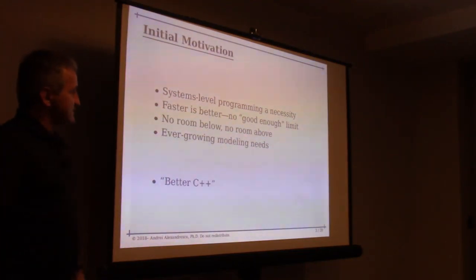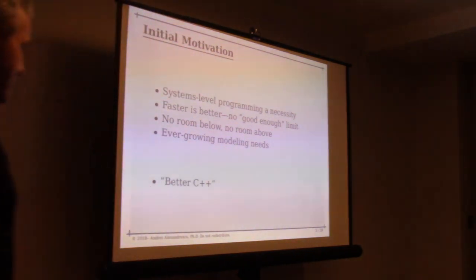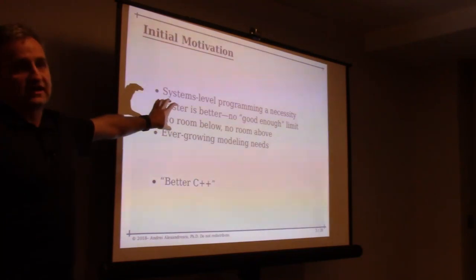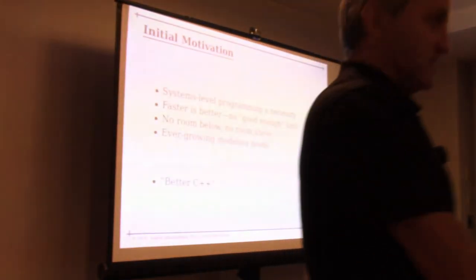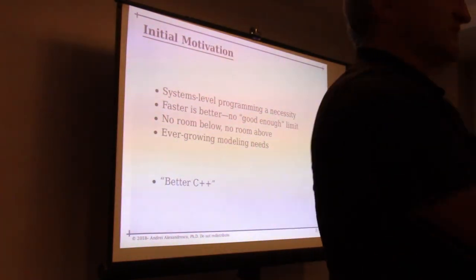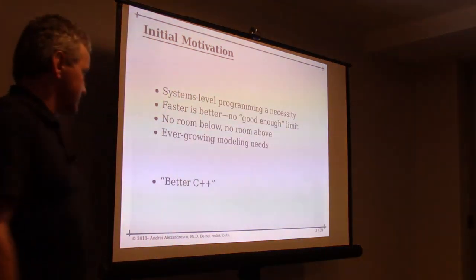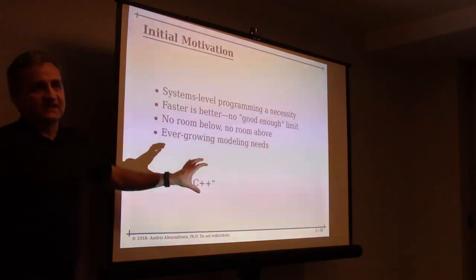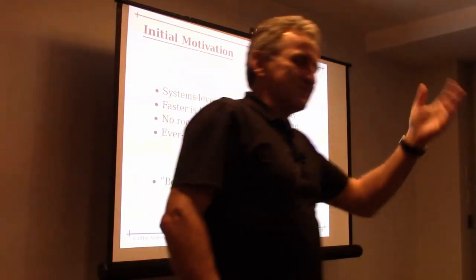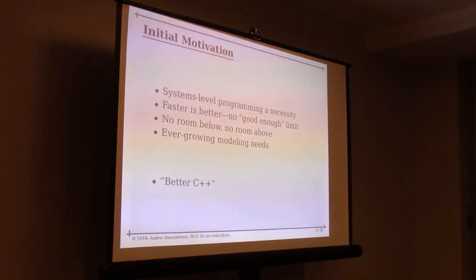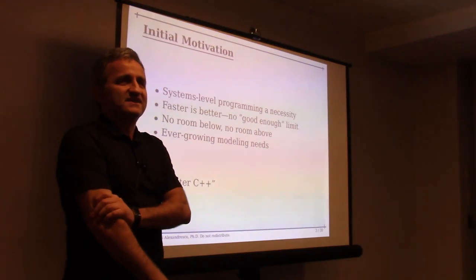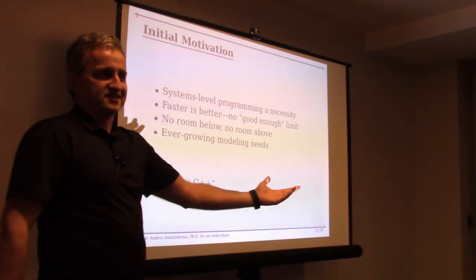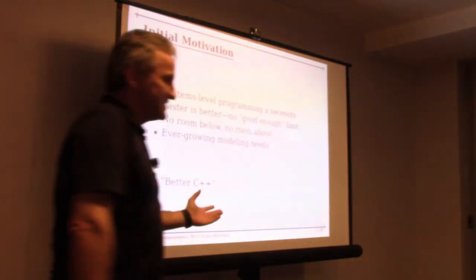One trend running like crazy for the past couple of decades has been ever-growing modeling needs. Everybody wants more complicated things — you know how to multiply two matrices, I want a neural network; you have that, I want deep learning; you have that, I want an SVM. The name 'D' kind of summarizes it — it's like after C, right? The name of the language was actually Mars, but nobody called it Mars, everybody called it D. It's like C++++, after the increment. So it started as a better C++.